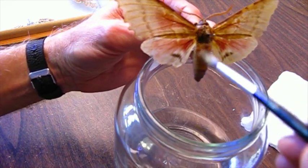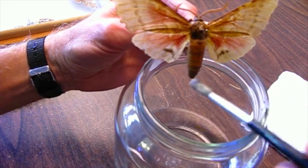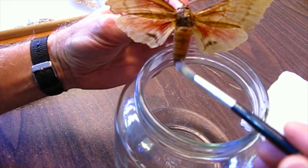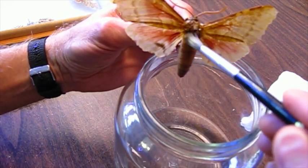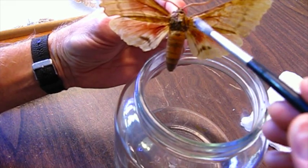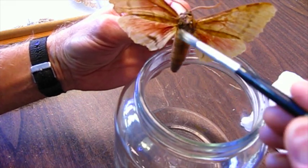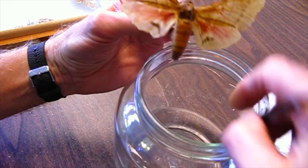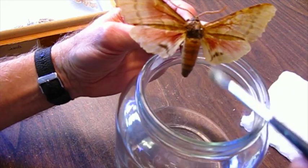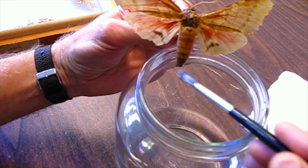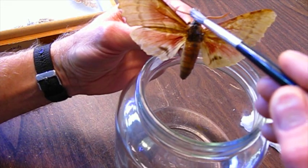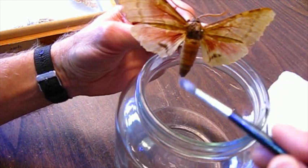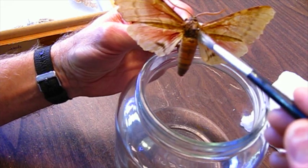This is going to mat the hairs, and once the specimen is dry we can fluff them up a little bit. It's not ideal, but it's certainly better than tossing the specimen. If you didn't treat it, it would continue to grow mold fuzz and contaminate the other specimens in the collection.